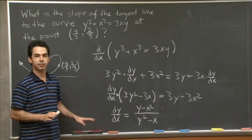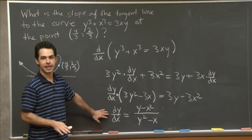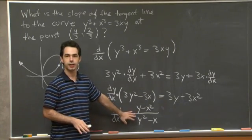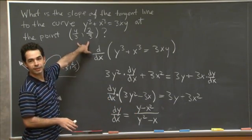So this is y minus x squared over y squared minus x. OK, so at any point x, y on this curve, the slope of the tangent line is given by this expression here.